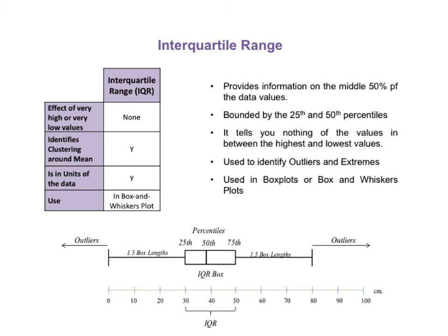The lowest and highest data values in the data set are outside the IQR box to the left or right, so the interquartile range itself tells us nothing about them. The IQR is helpful in describing the clustering around the mean, and it is in units of the data. Like the range, the IQR is useful for descriptive purposes, but unlike the variance and standard deviation, it is not commonly used in statistical calculations.